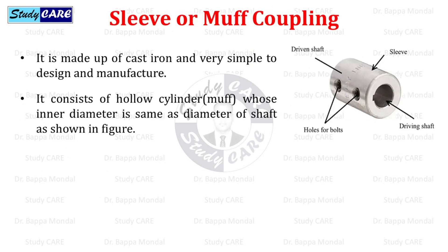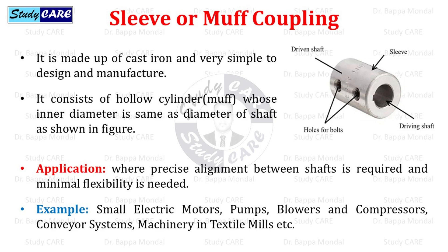Sleeve or muff coupling is made up of cast iron and is very simple to design and manufacture. It consists of a hollow cylinder (muff) whose inner diameter is the same as the diameter of the shaft, as shown in the figure. It is used where precise alignment between shafts is required and minimal flexibility is needed — for example, small electric motors, pumps, blowers and compressors, conveyor systems, and machinery in textile mills.